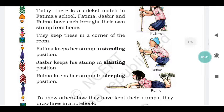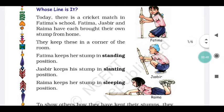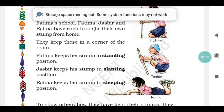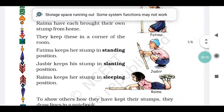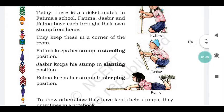Fatima keeps her stump in a standing position. Jasbir keeps his stump in a slanting position. Reema keeps her stump in a sleeping position. So we have three positions: standing, slanting, and sleeping.